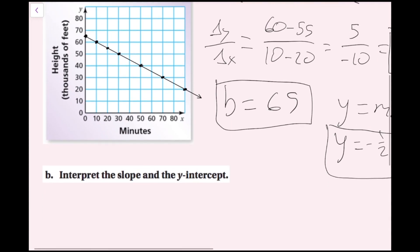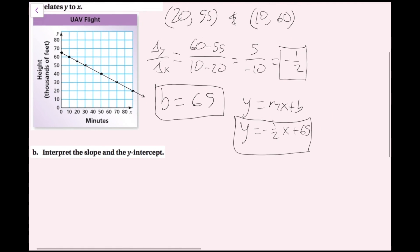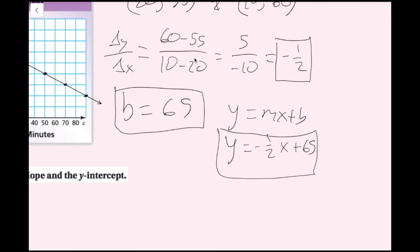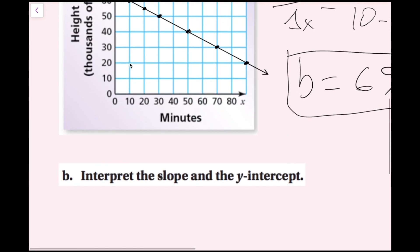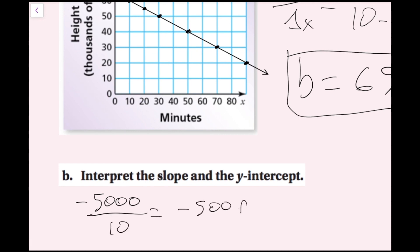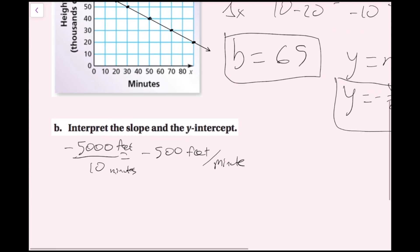Now Part B: interpret the slope and the y-intercept. The slope of negative one half — my change in y over change in x — means I'm going down 5,000 feet every 10 minutes. That simplifies to negative 500 feet per minute, meaning the UAV is reducing altitude by 500 feet per minute.